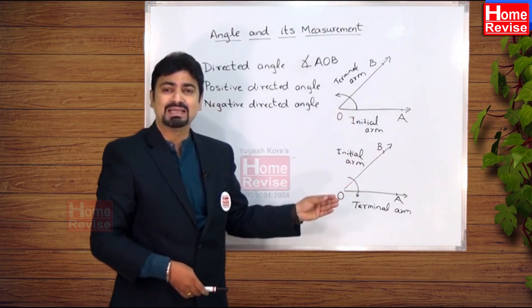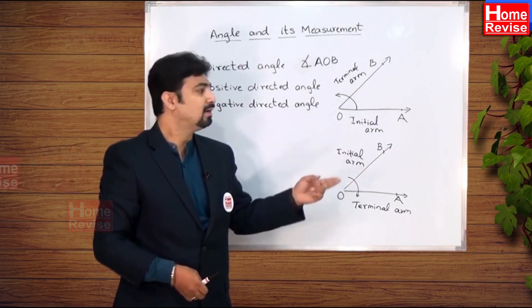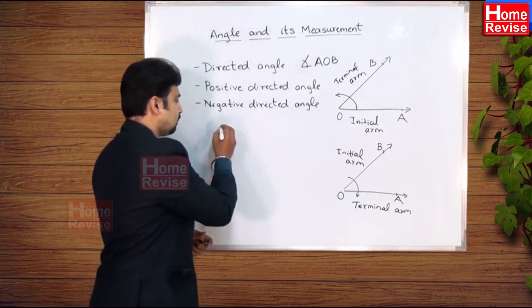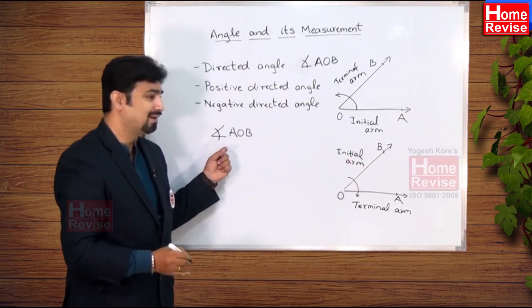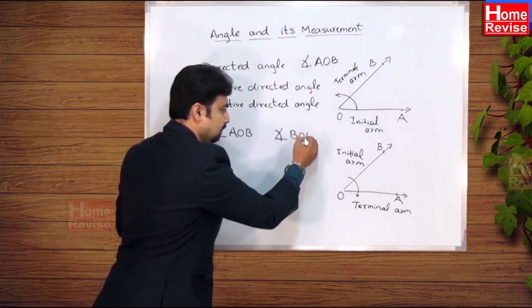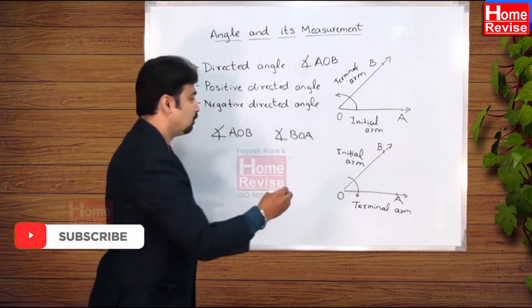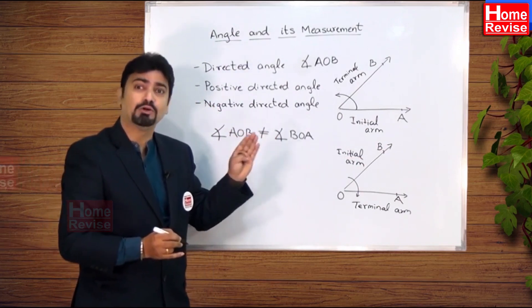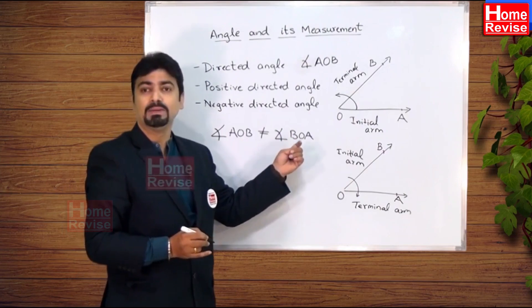Although in these two cases the magnitude of the measure is the same, the signs will be different. The first is a positive angle and the second is a negative angle. Therefore, the first is denoted as directed angle AOB and the second as directed angle BOA. Note that these two angles are not equal, even though the magnitude of their measures is the same. Directed angle AOB is not equal to directed angle BOA.